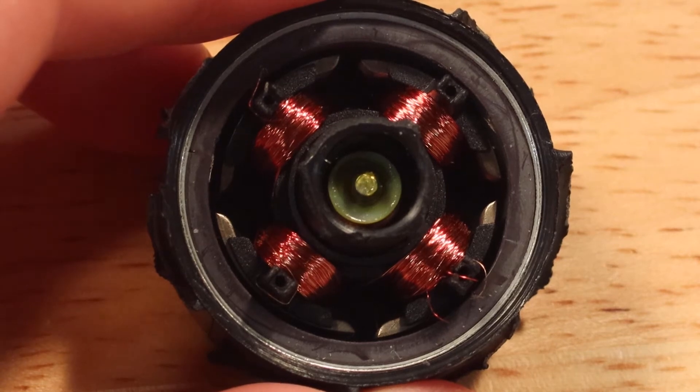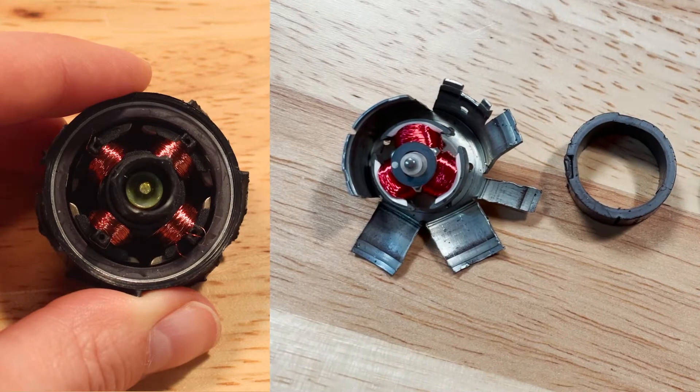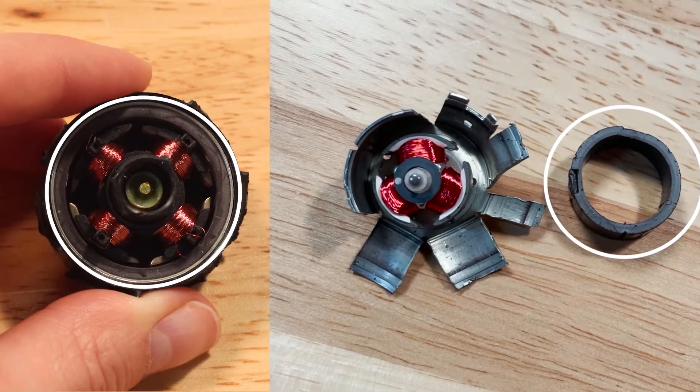Inside the motor, the shaft is surrounded by a number of wire coils. Around the outer edge of the coils is a magnet, or series of magnets.